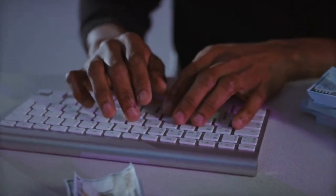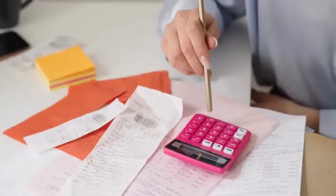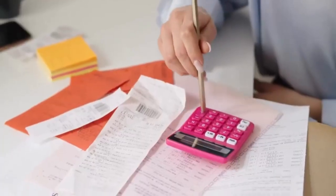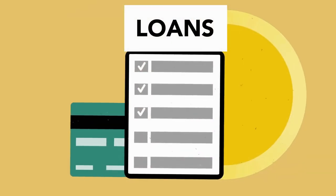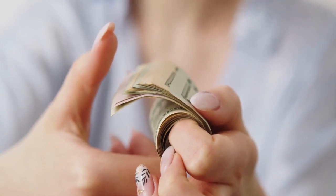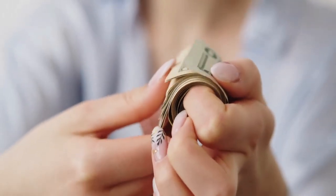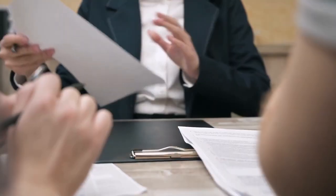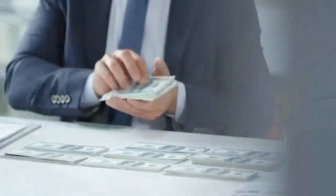To understand how banks create money, it's important to understand the concept of fractional reserve banking. Fractional reserve banking is a system by which banks are able to lend more money than they have in their vaults. This is done by extending loans to customers in exchange for deposits.